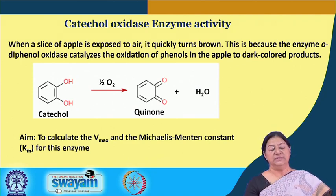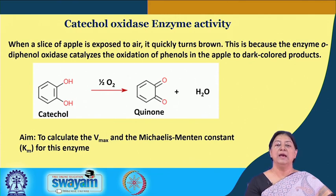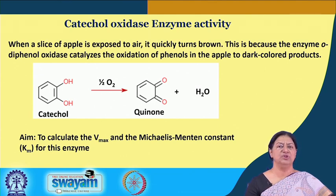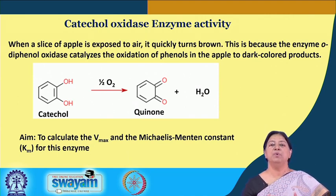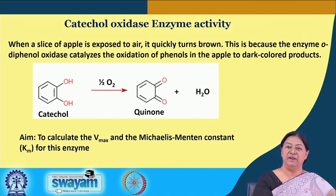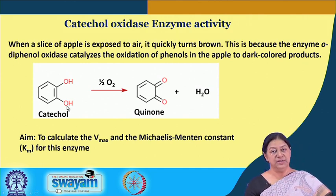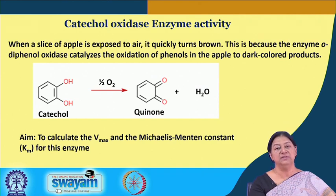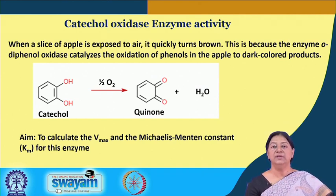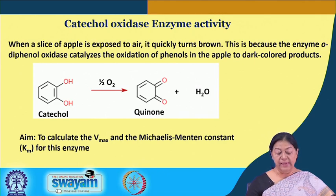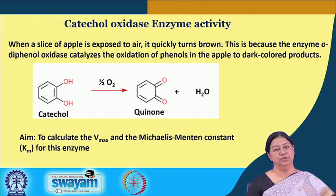We can take an apple, extract the enzyme present in it, and use catechol as a substrate — catechol being a polyphenol with OH groups. We then monitor the formation of the dark colored product. The aim is to find V max by Michaelis-Menten kinetics and the Michaelis-Menten constant K m for this specific enzyme.